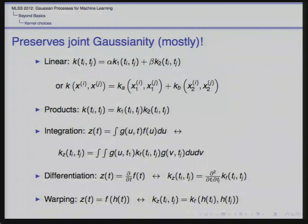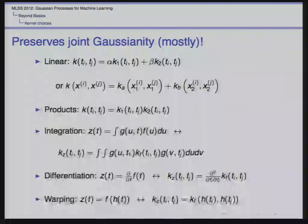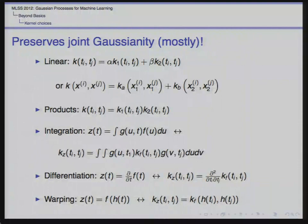Many of these operations preserve joint Gaussianity. In the linear case where y equals f plus noise, this respects joint Gaussianity between y, f, and n — they all remain jointly Gaussian. That's true of linearity but not of products. Differentiation is an interesting example: if we have a GP on f and a GP on its derivative z, these are still jointly Gaussian with one another. That gives us the opportunity — if we measure both the function and its derivative — to still use that in the GP modeling context.